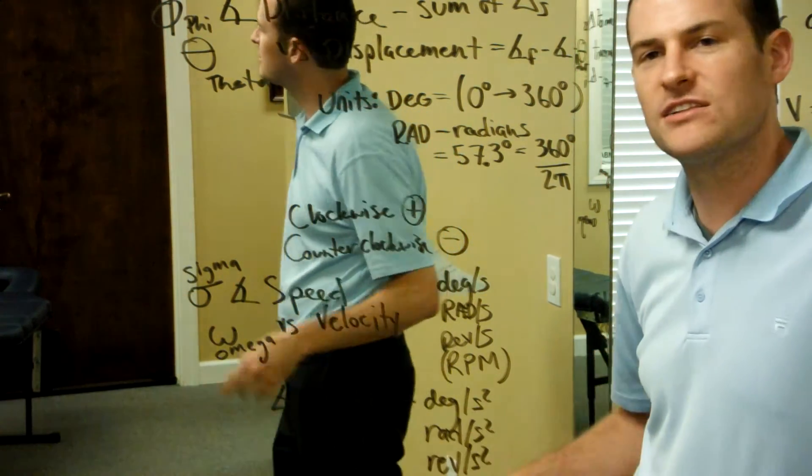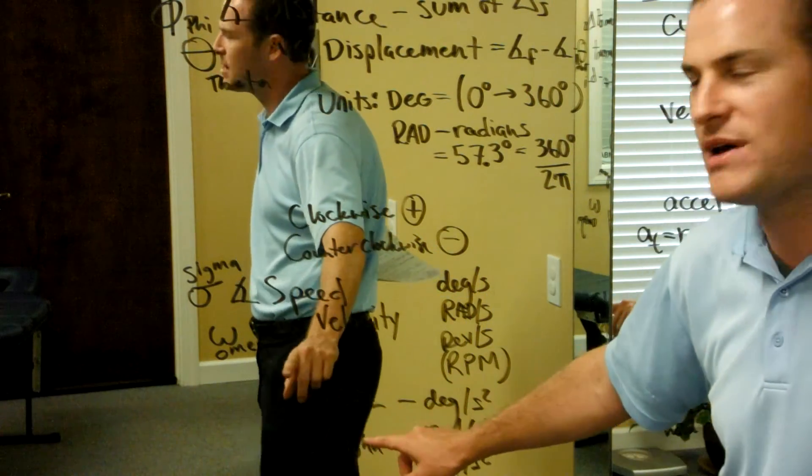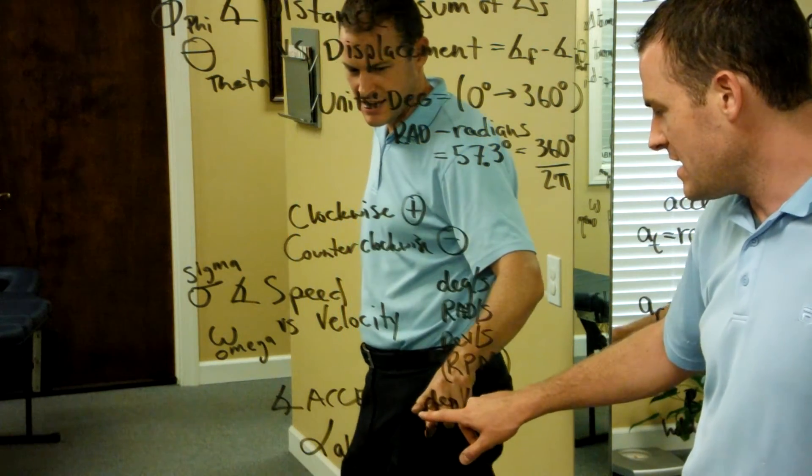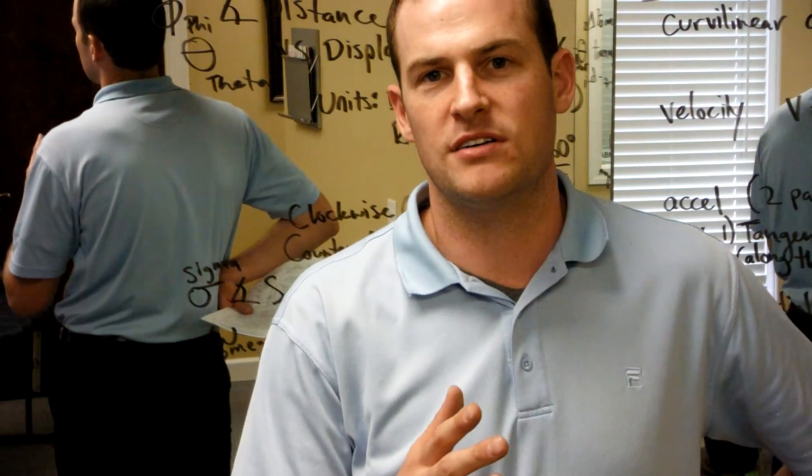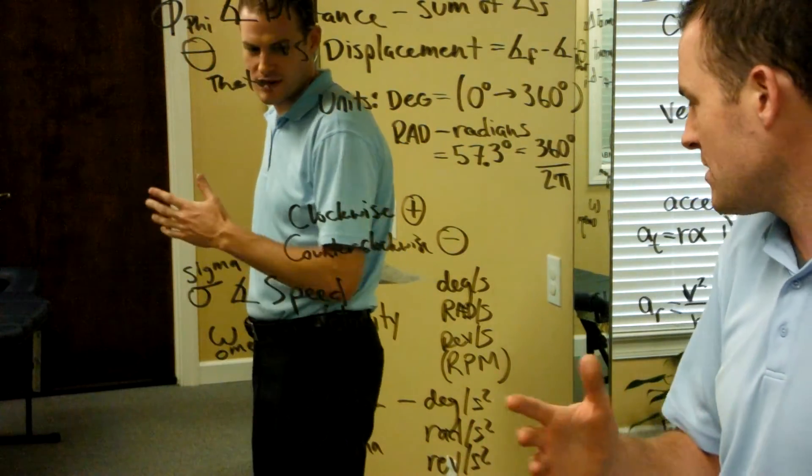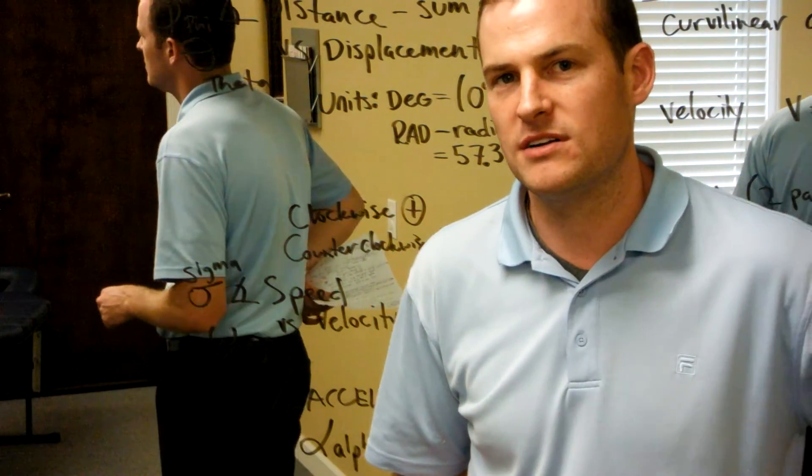And finally, we have angular acceleration, which is also alpha. It looks kind of like the Jesus fish on the back of cars. Angular acceleration is a measure of degrees per second squared over the change in degrees on a given amount of time, radians per second squared, or revolutions per second squared.